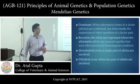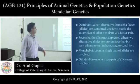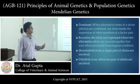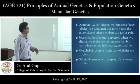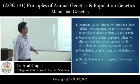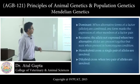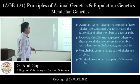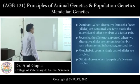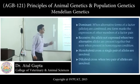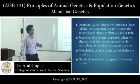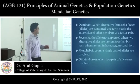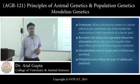Dominant means when alternative forms of a factor — that is, alleles — are combined, one form masks the expression of the other member of the pair. Recessive is the allele that is not expressed when two alternative alleles are present together.